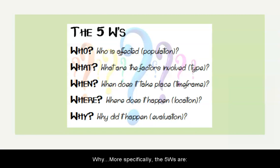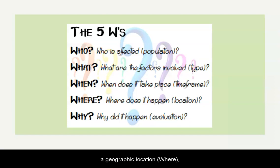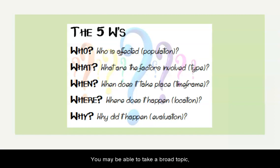More specifically, the five W's are: a specific population (who), an impact (what), a geographic location (where), a time in history (when), or a cause or effect (why). You may be able to take a broad topic and add one or more of the five W's to help focus.